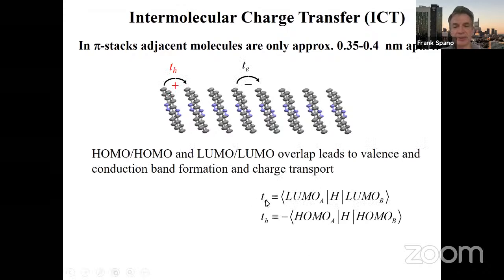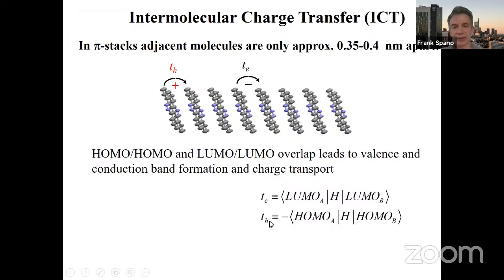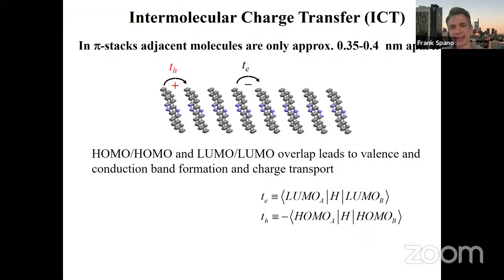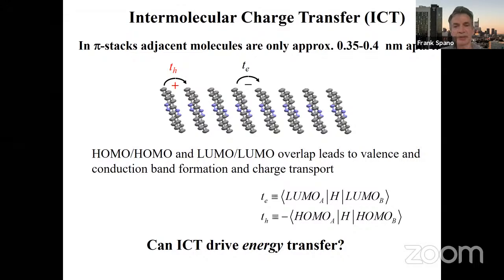But what does that have to do with excitons? Can intermolecular charge transfer also drive energy transfer? If it can, is there an effect on the excitonic coupling? We have neutral systems, but the exciton can dissociate to form charges through these overlap integrals. Let's see how to understand it. The picture I'm showing is a little two-step. Whereas before, Coulomb coupling resulted in a direct transfer of excitation from the left molecule to the right, CT-mediated coupling through these electron and hole transfer integrals is a two-step process.